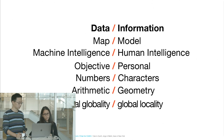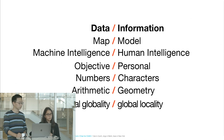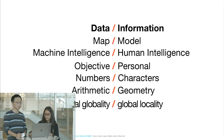On the other side, it's about information — when you make a model using human intelligence. This is personal and intentional, working with characters and geometry, representing a global locality. We wanted to go through a few slides to remind you what we've been discussing since the beginning.